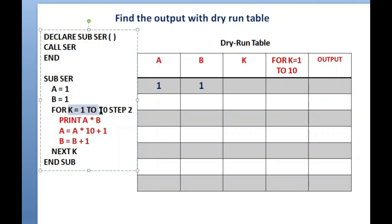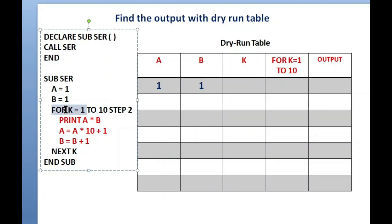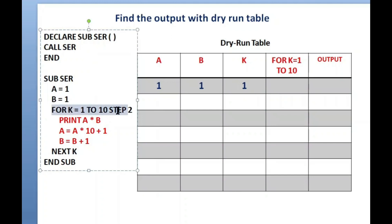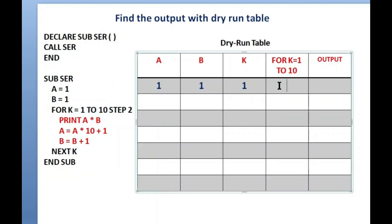For K = 1 TO 10 STEP 2 — so the first value of K is 1, and the loop goes up to 10, incrementing by 2 each time (STEP 2). The first time K is 1, the FOR loop checks the condition: is K = 1 in the range 1 to 10? Yes, it is, so I write TRUE here.